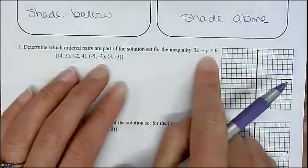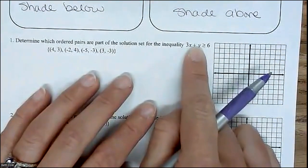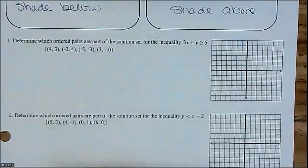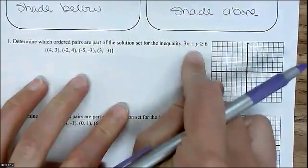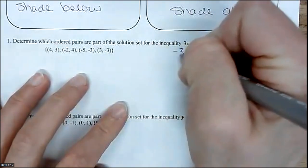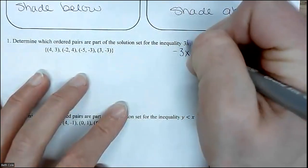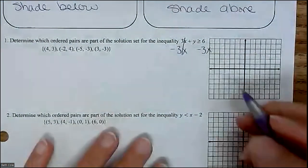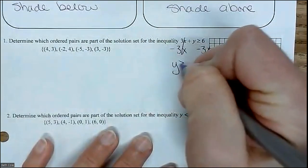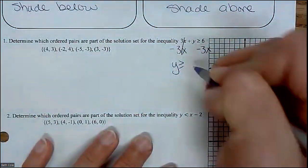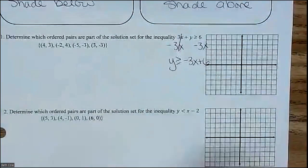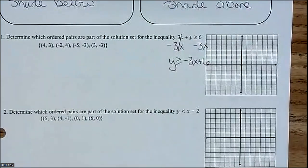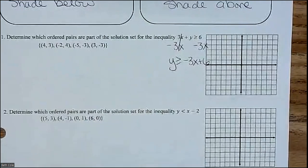So down here, look at, you need for y to be alone before you can graph this. What would you do to get y alone? Subtract 3x. Write this down. Minus 3x. It is exactly the same as an equation, just instead of an equal you have a different symbol. So this is going to be y is greater than or equal to negative 3x plus 6. Now it looks like y equals mx plus b. Just instead of an equals, you have a different symbol.